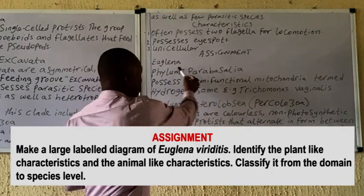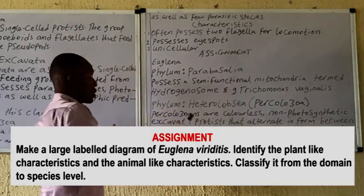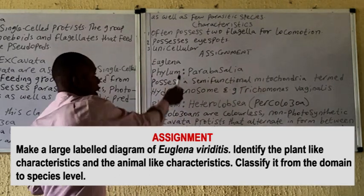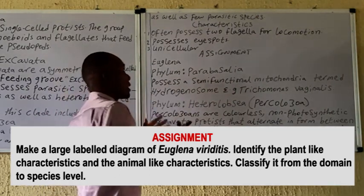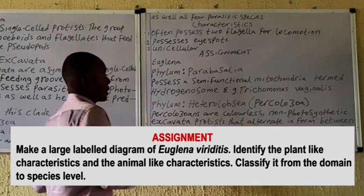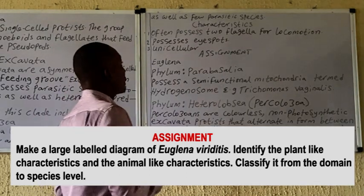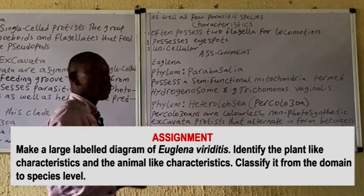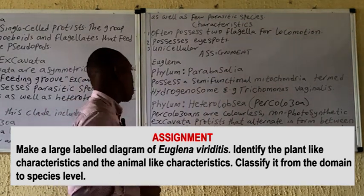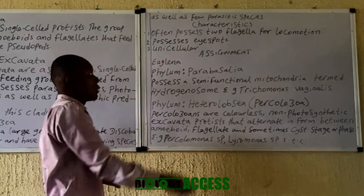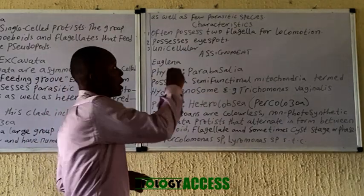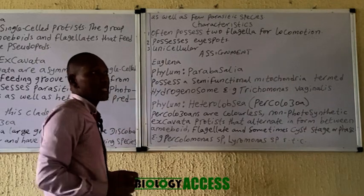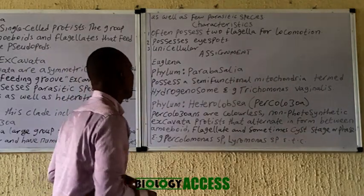As an assignment, draw a large diagram of Euglena — one is displayed on the board — then highlight the characteristics of the Euglenozoa. This will help you understand the characteristics better. Note that their outer cover, as seen from the diagram, is a kind of pellicle.